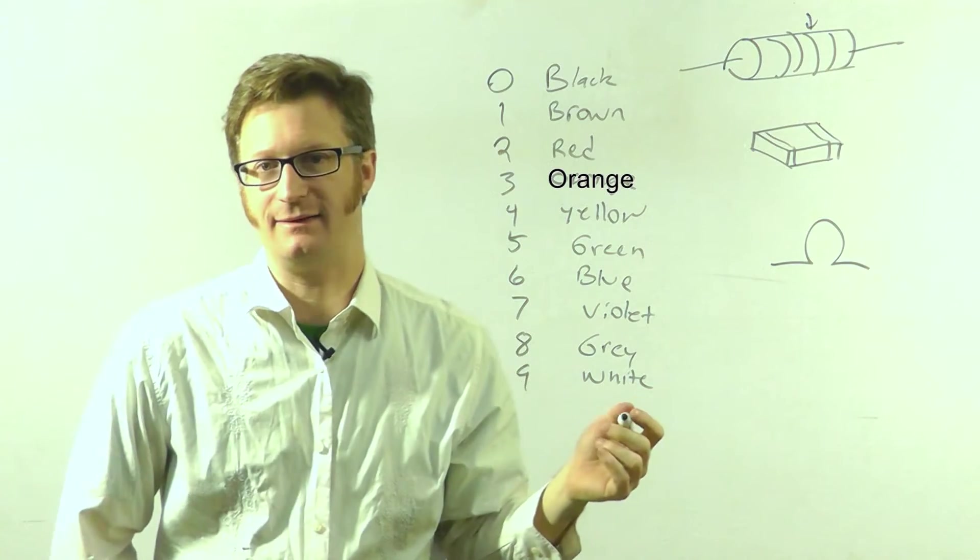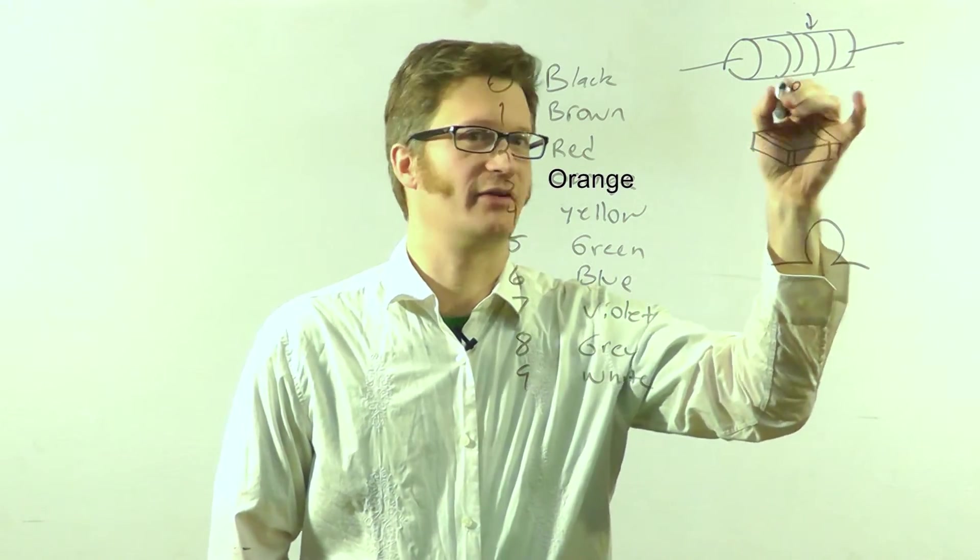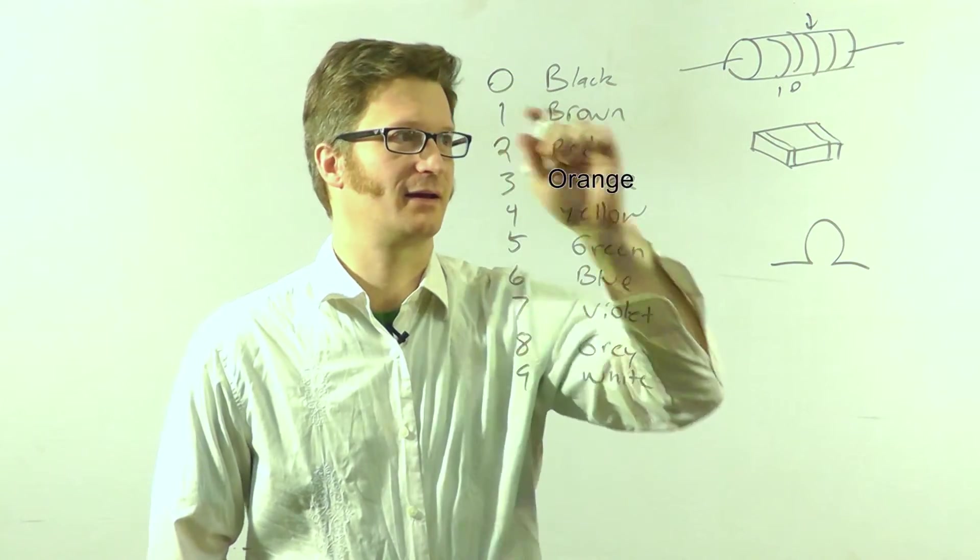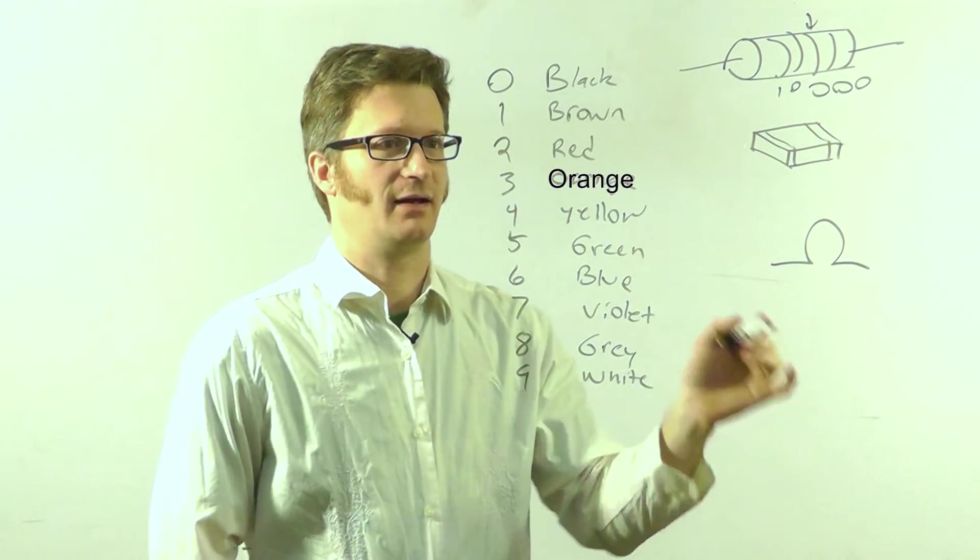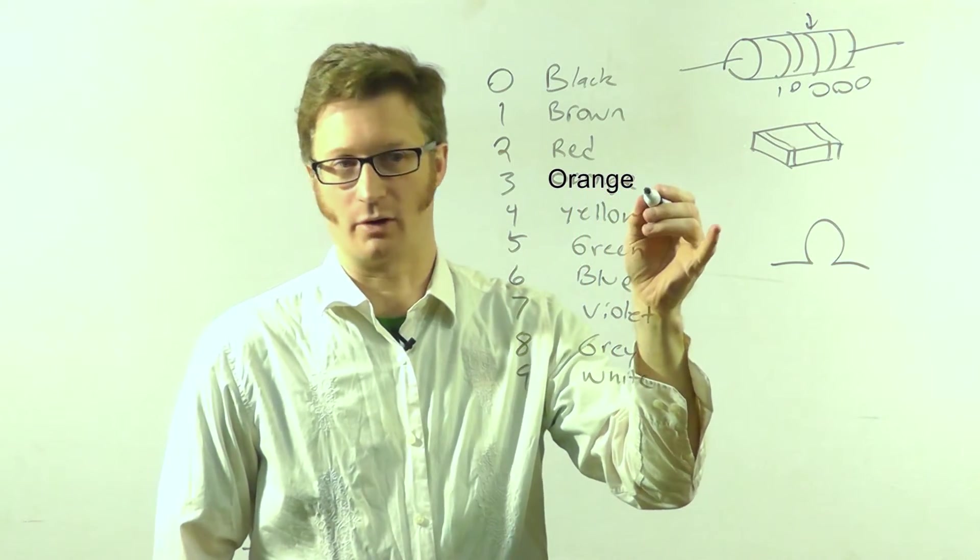If I had a 10K resistor, that would be one zero, so brown, black, and then there are three zeroes after that. And so I look here, and that would be brown, black, orange.